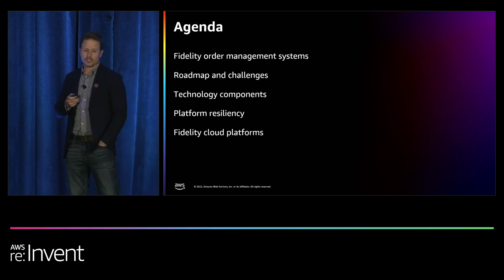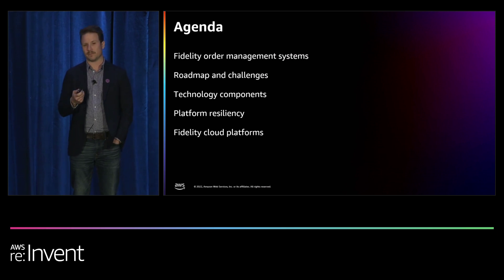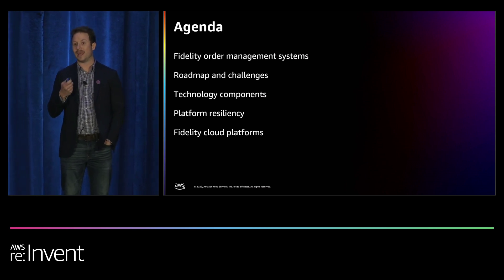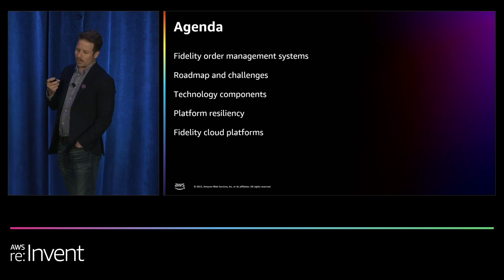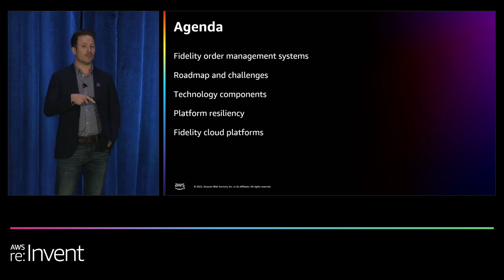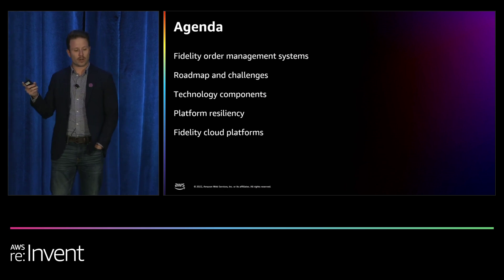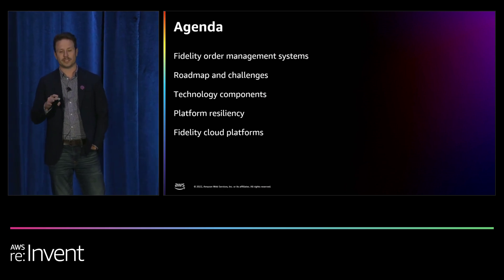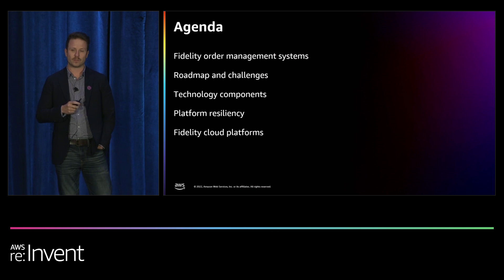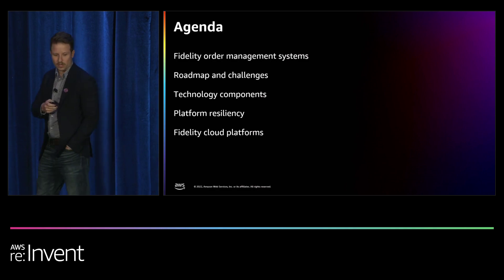We've got a useful agenda today. First, we're going to talk about Fidelity's order management system. Then we'll segue into the roadmap and challenges migrating this latency-sensitive application to AWS. Then we'll dive into the actual architecture and the AWS components that comprise it. Then Amr will talk about platform resiliency and finally an overview of Fidelity's cloud platforms and how they work today.